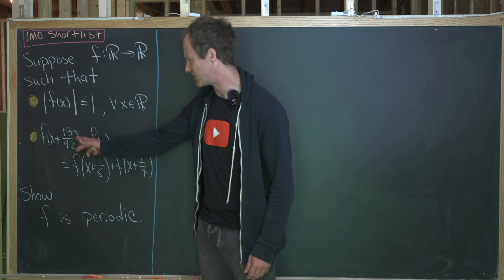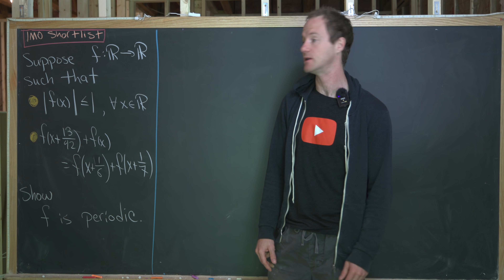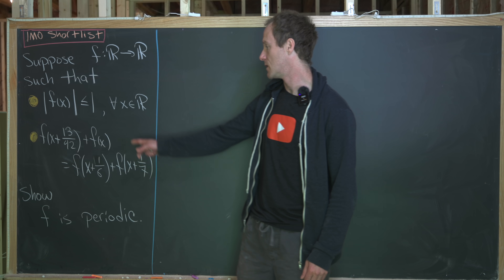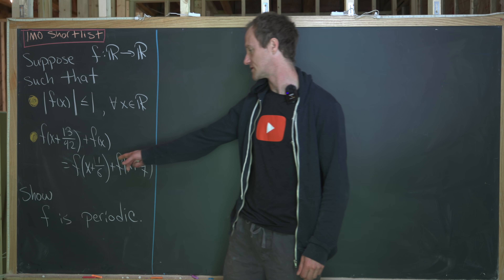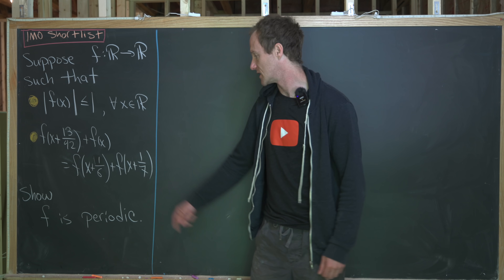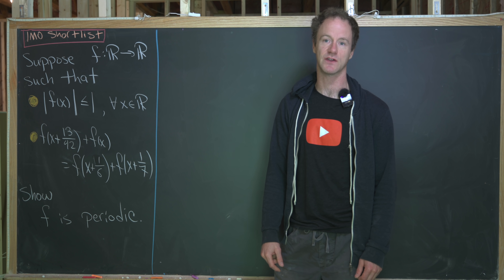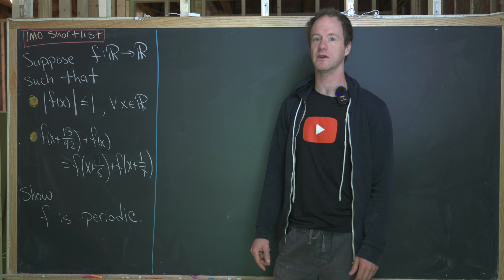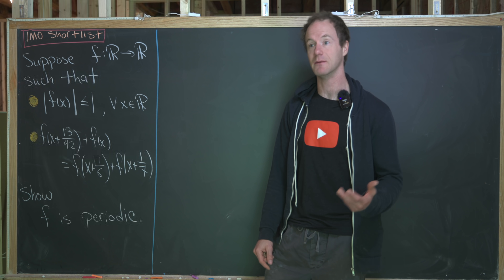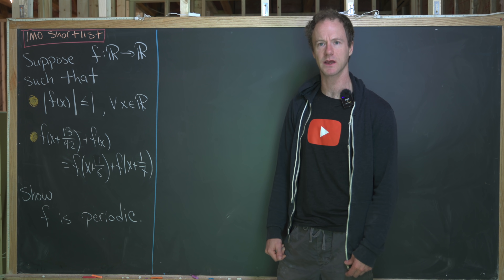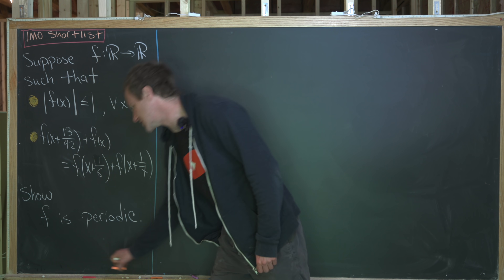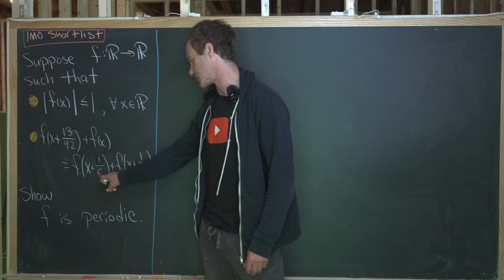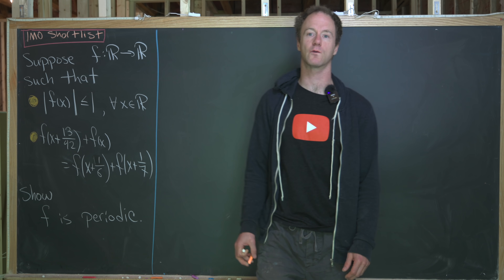Furthermore, we have this semi-periodicity condition: f(x + 13/42) + f(x) equals f(x + 1/6) + f(x + 1/7). Our goal is to show that this condition, which looks kind of similar to periodicity, is actually implying that this function is periodic. The first thing to do is to look at the relation between the numbers 1/6, 1/7, and 13/42.